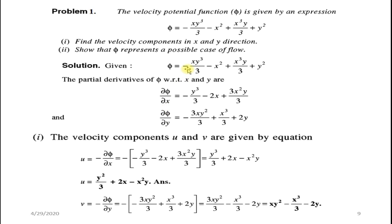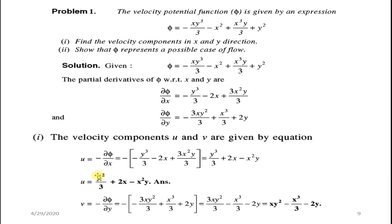Substituting into u = −∂φ/∂x: u = y³/3 + 2x − x²y. Similarly, v = −∂φ/∂y gives: v = xy² − x³/3 − 2y. Since the point is not specified, the expressions for u and v in terms of x and y are sufficient.